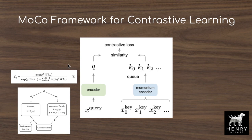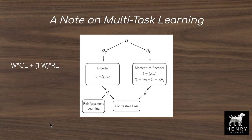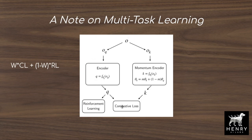Similar to SimCLR, a multi-layer perceptron projection maps queries and keys into a new space for the loss comparison. CURL uses multitask learning to structure the loss, with gradients flowing from the RL agent back through the latent representation Q and through the encoder network, as well as the loss from comparing queries and positive/negative keys in the MoCo framework.